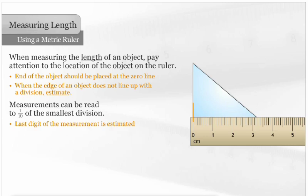The last digit of the measurement is estimated. This means that two people can read the same measurement but record different answers. This is called the reading error.